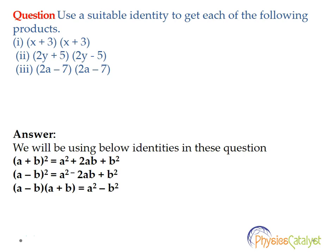Use a suitable identity to get each of the following products. Part 1 is (x + 3)(x + 3). Part 2 is (2y + 5)(2y - 5). Part 3 is (2a - 7)(2a - 7).